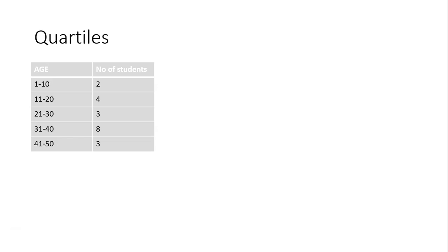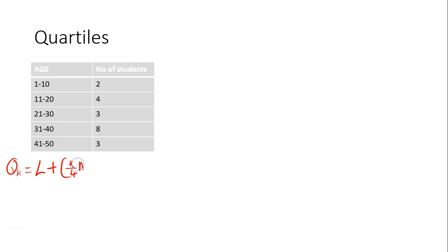So the first one we're going to look at is quartiles. The formula we'll be using is: L plus K over 4 times N minus CFB times H divided by small letter F.